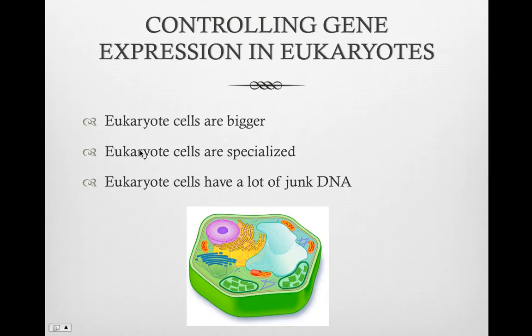The expression of genes in eukaryotes is more complex than in prokaryotes. Eukaryotic cells are bigger, have about 10 times more genes, are specialized, and have a lot of junk DNA, which is the non-coding areas. Also, they have promoters, stop codons, and other areas that do not directly code for a protein.